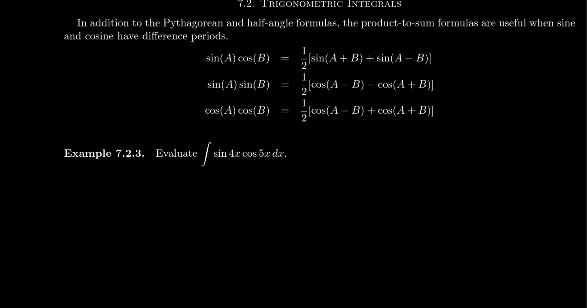We use things like the Pythagorean identities, the half-angle identities, plus derivations of those identities. So what happens if you are looking at an integral that looks something like the following here?